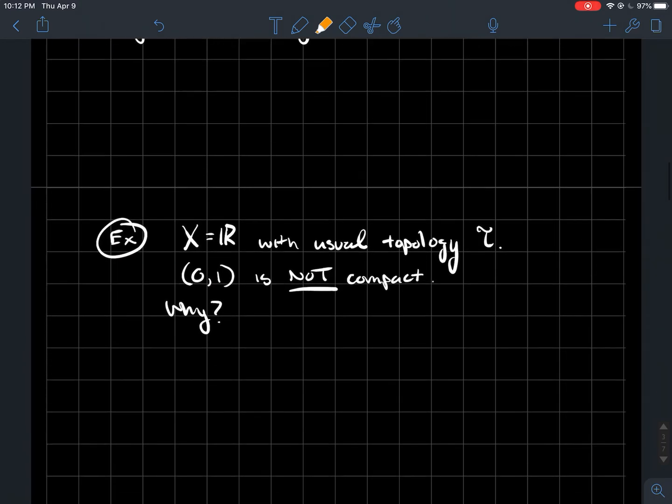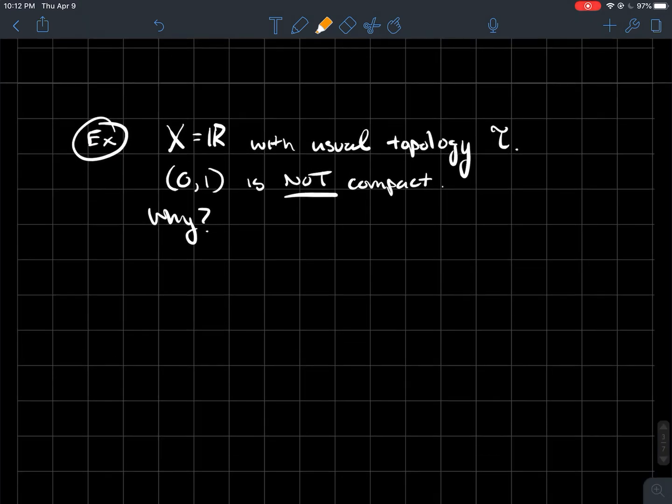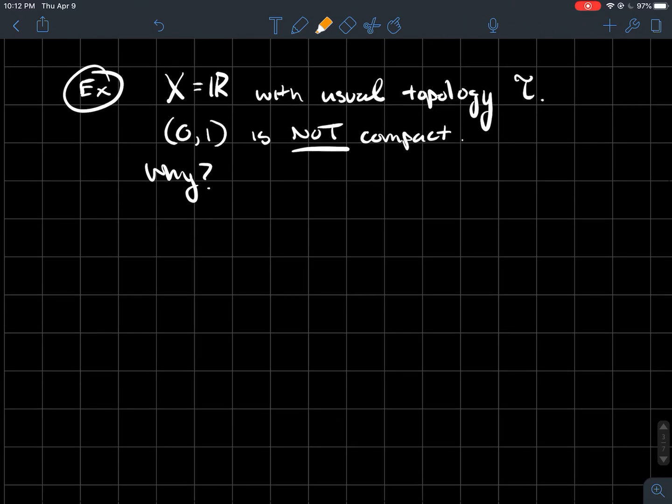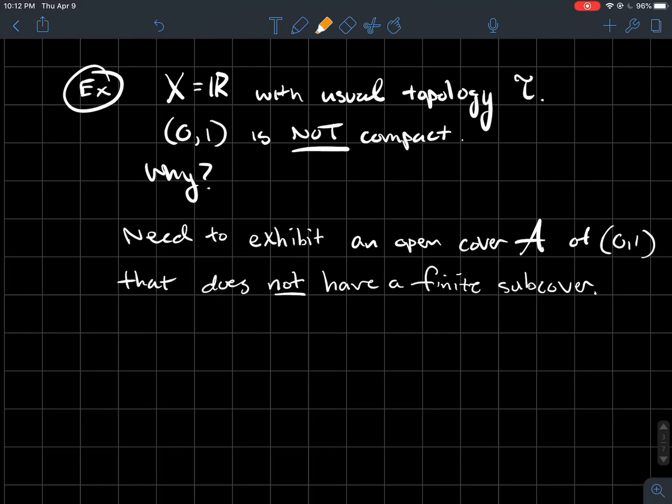So let's look at a more interesting example. If X is the real line with the usual topology, like we talked about earlier, then 0, 1 is not compact. So how would you show something's not compact? What you need to do is show that there exists an open cover. You need to show me a specific open cover that cannot be reduced to a finite subcover. So here's an example.